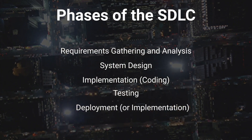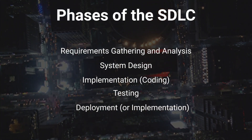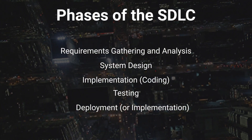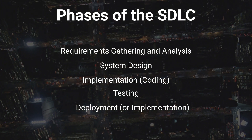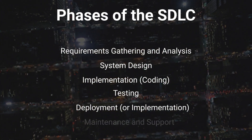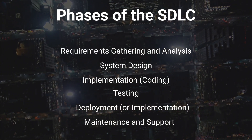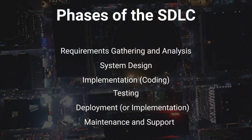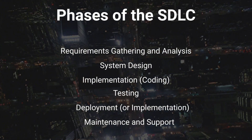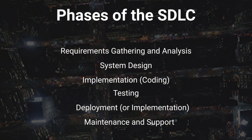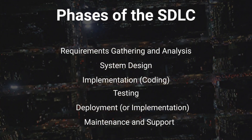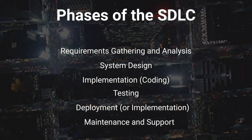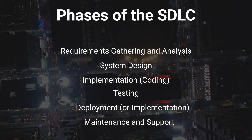Phase 5 — Deployment: Once the software has passed testing and quality assurance, it is deployed to the production environment. This phase involves installing the software on the target systems and making it accessible to end-users. A smooth transition from development to production is critical to avoid disruptions. Phase 6 — Maintenance and Support: The final phase of the SDLC involves ongoing maintenance and support. After deployment, software requires updates, enhancements, and troubleshooting to address user feedback, adapt to changing requirements, and resolve issues. The maintenance phase can continue for the entire lifespan of the software. These six phases provide a structured and organized approach to software development, ensuring that projects are well-managed, efficient, and result in high-quality, user-centric software solutions.